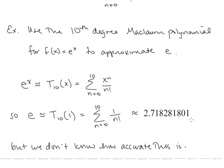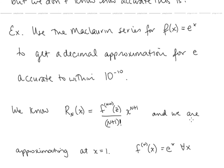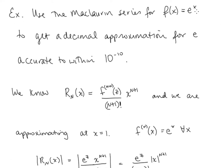But we didn't pay any attention to the accuracy here. If we take a look at the remainder term, we can get approximations to a desired degree of accuracy. We know that the error in the approximation using the nth degree Taylor polynomial is given by r sub n, and that can be expressed by Taylor's formula.